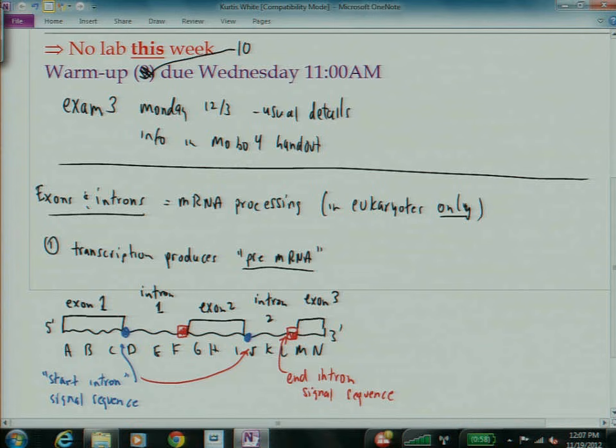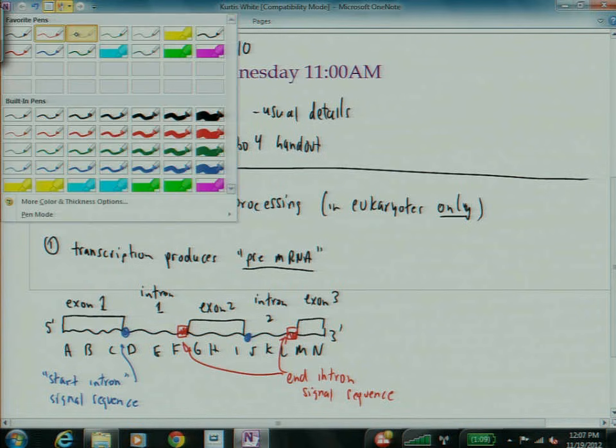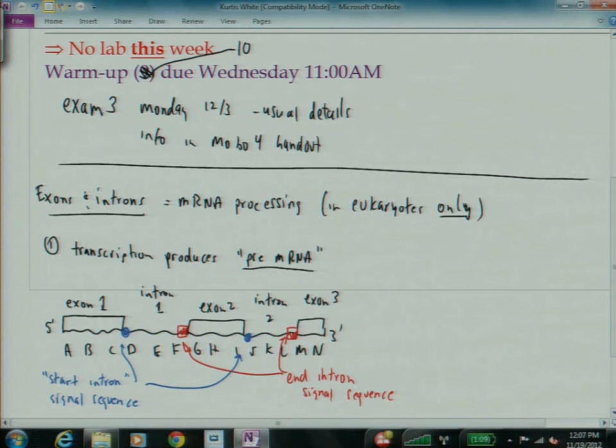And the idea is, so there's two of these. Each intron has a start and an end. And so just like every other process we've talked about, there's some machine that reads a sequence. And that machine needs a start signal and a stop signal. So promoters has RNA. RNA polymerase looks for promoters and terminators. Ribosomes looks for start codons and stop codons. Splicing machinery looks for start intron sequences and end intron sequences. They don't have fancy names, just start and end. So it's a particular sequence of RNA nucleotides that says start an intron here and keep splicing it out until you get to this point and then stop splicing.